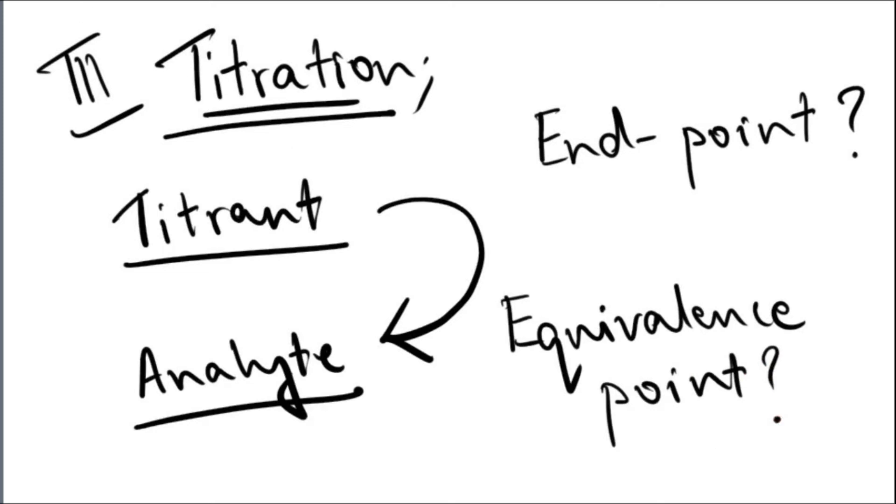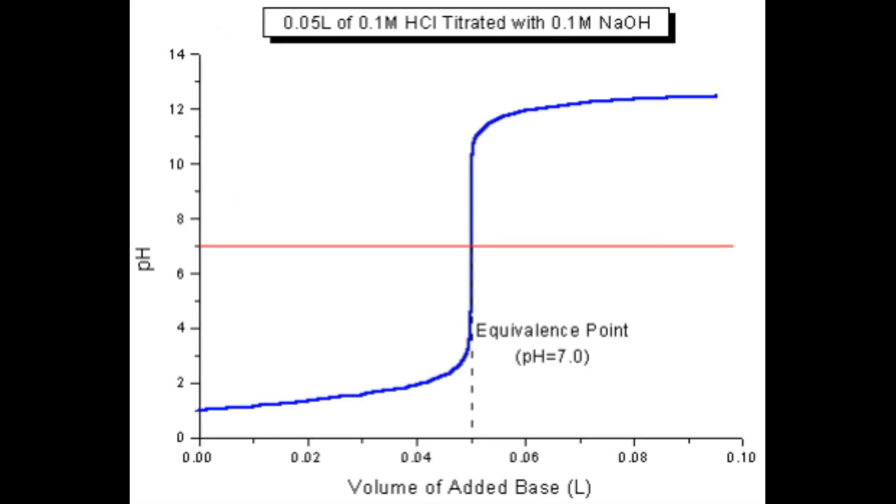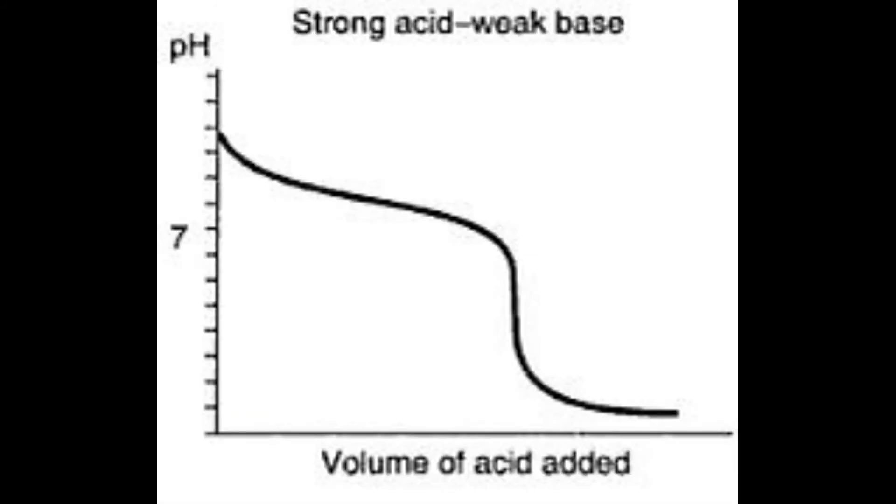The equivalence point occurs before the endpoint, which is why we can say it is more accurate. Now this is a graph of a strong acid and a strong base. You can see the equivalence point is like a straight line.